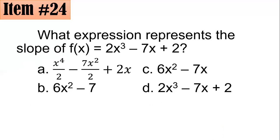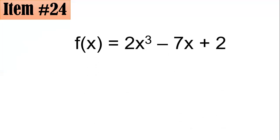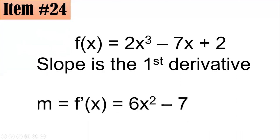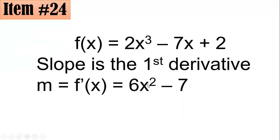Item 24: What expression represents the slope of f(x) equals 2x cubed minus 7x plus 2? In calculus, the slope of a function is its first derivative. Using the power rule: the derivative of 2x cubed is 6x squared, the derivative of negative 7x is negative 7, and the derivative of the constant 2 is 0. Hence B is the correct answer.